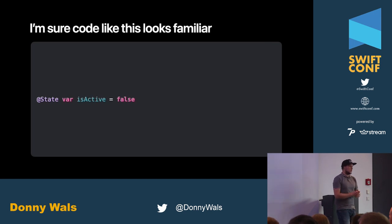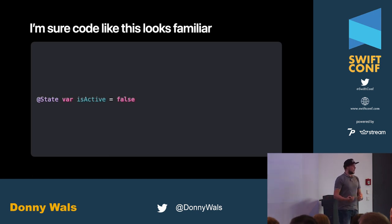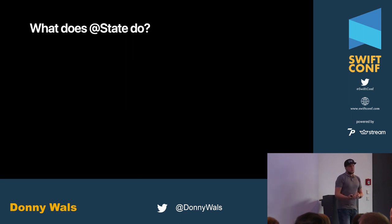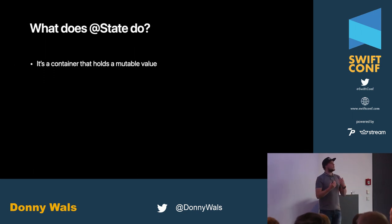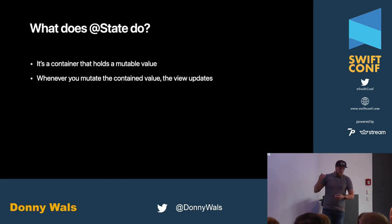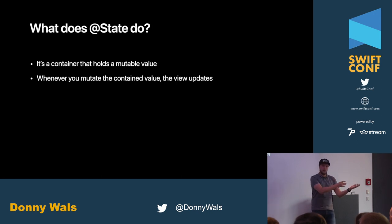This code looks familiar — it's a @State property that maintains whether some Boolean is active or not. If you've seen SwiftUI before, you know that mutating that property to true and back to false will redraw the view every time. So what does @State actually do? It's a container that holds a mutable value. SwiftUI views are structs, and @State is applied to a variable, which means we can now mutate values in a struct. The state is a container wrapping our value, so we're not mutating the view struct itself.